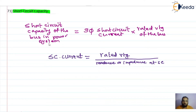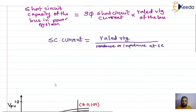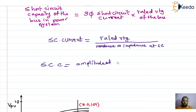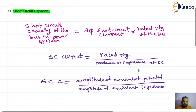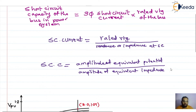As per the definition of short circuit capacity calculation, we can also calculate the short circuit capacity with this formula: it is nothing but the amplitude of equivalent potential divided by the amplitude of equivalent impedance, where the amplitude of equivalent potential is the rated value and the equivalent impedance is at short circuit. These are the basic ways to calculate the short circuit capacity of a bus in a power system.